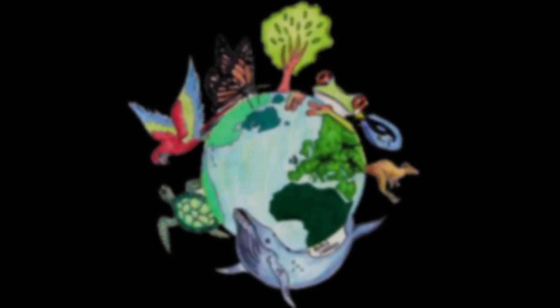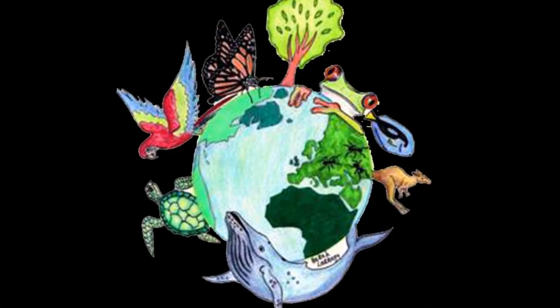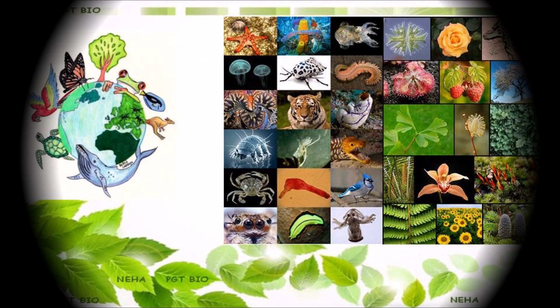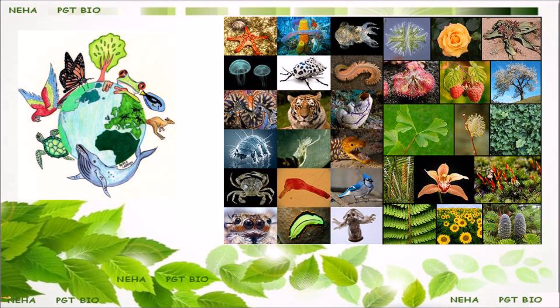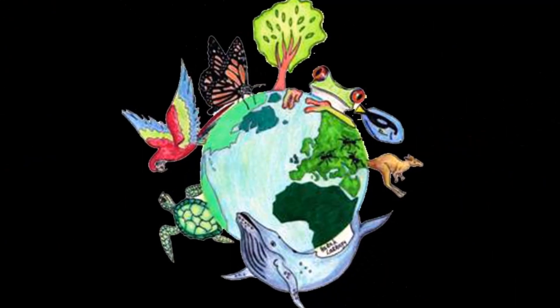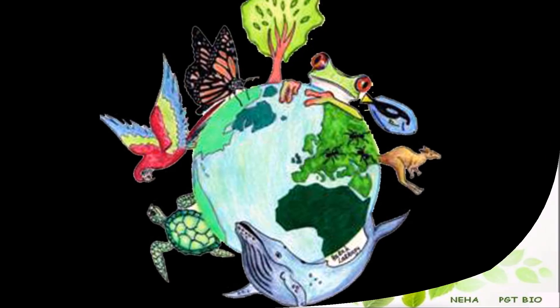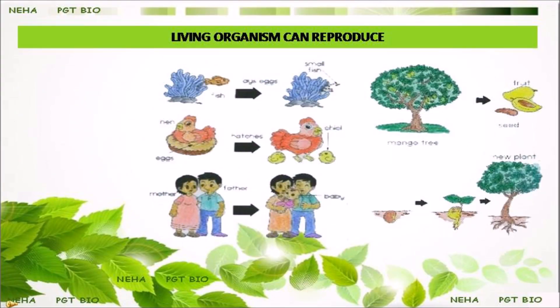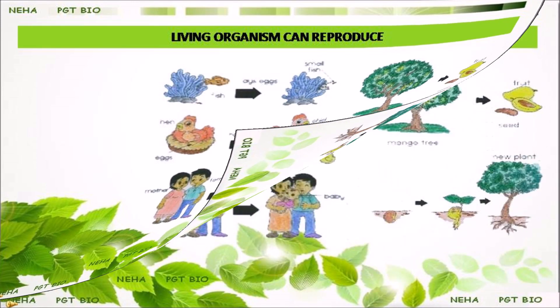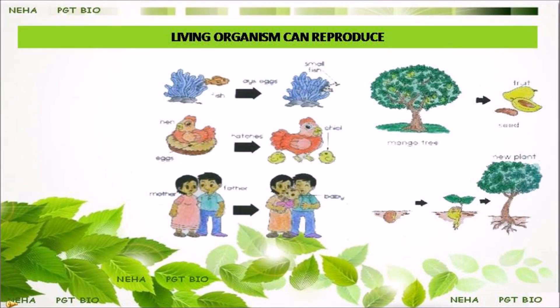Our earth is home to countless plants and species, all of which can live only for a limited time span and are bound to die. Yet these species have existed for thousands of years — that's because living organisms can reproduce, giving rise to offspring which in turn grow and reproduce their own offspring.